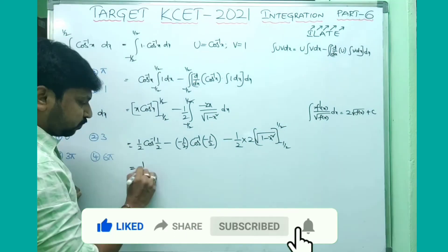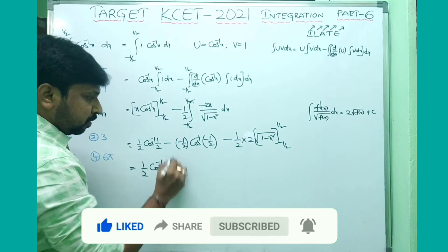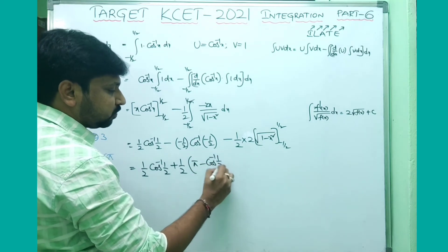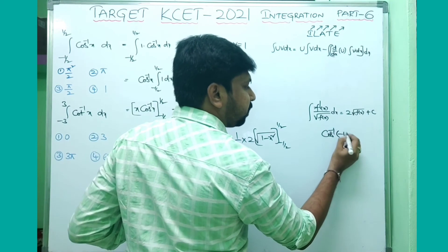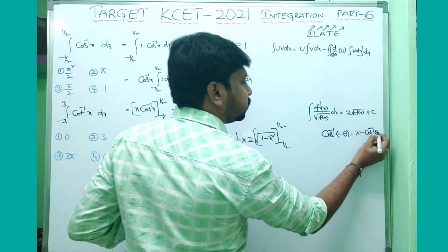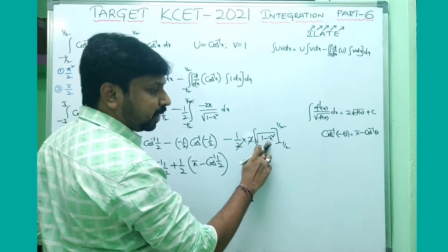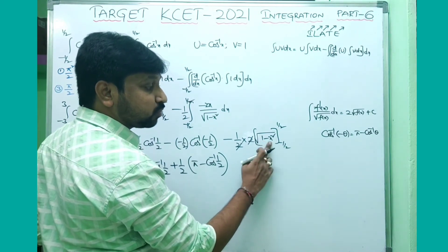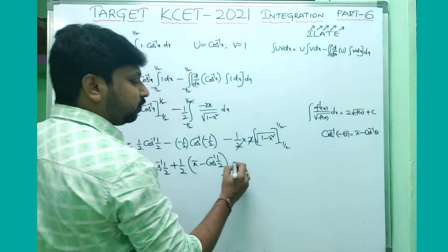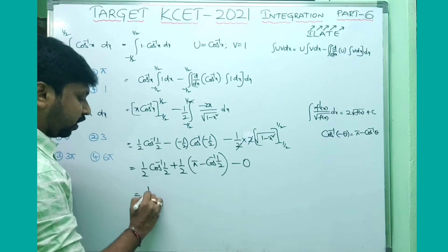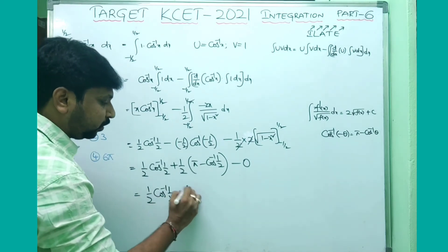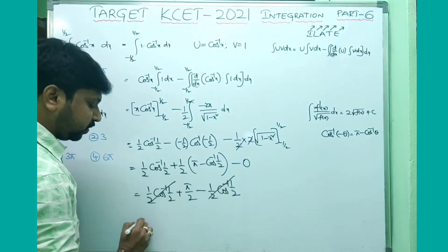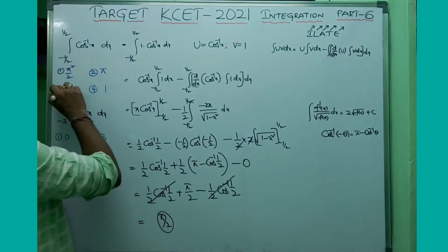After substituting the upper limit 1/2: cos⁻¹(1/2) = π/3. For the lower limit, use cos⁻¹(minus θ) = π minus cos⁻¹θ. So: 1/2 · cos⁻¹(1/2) plus 1/2 · (π minus cos⁻¹(1/2)). The cos⁻¹(1/2) terms cancel, leaving 1/2 · π = π/2. So π/2 is your answer.